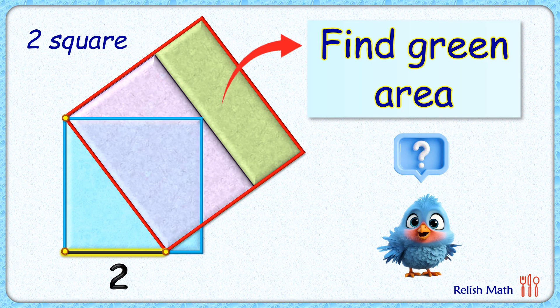This is an interesting question. We are given two squares: the blue square and the red square. The red square is divided into two rectangles. The length of the black line segment — the distance between the two vertices — is given as 2 centimeters. With this limited data, we have to find the area of the green rectangle.